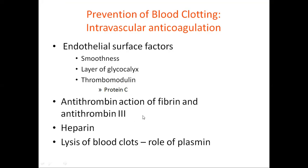The second factor is the antithrombin action of fibrin and antithrombin III. Almost 85 to 90 percent of the thrombin is inactivated by fibrin, and 10 to 15 percent of the thrombin is absorbed by fibrin along with antithrombin-3 and heparin. Heparin is the natural anticoagulant present in our body. It is a negatively charged conjugated polysaccharide.